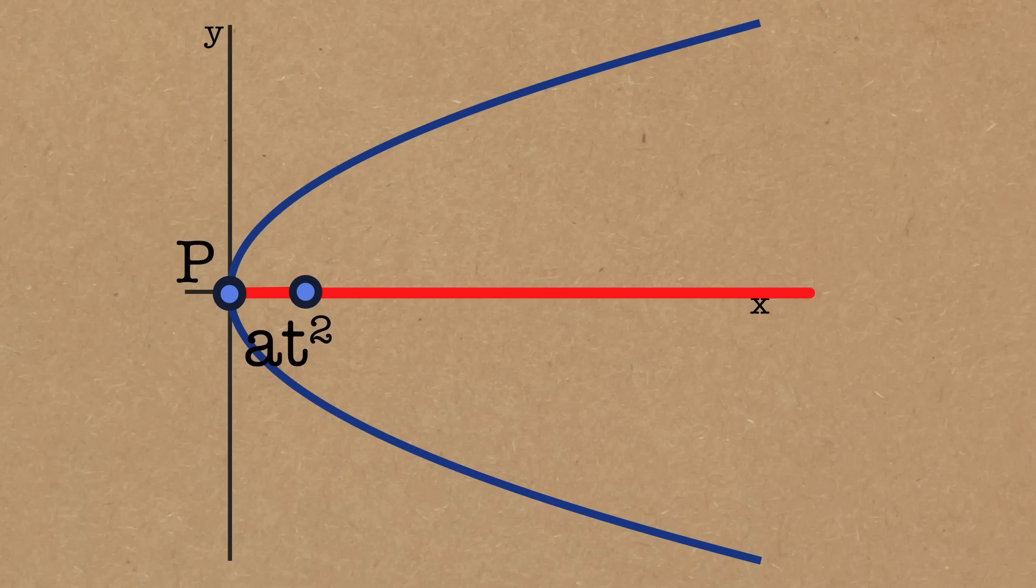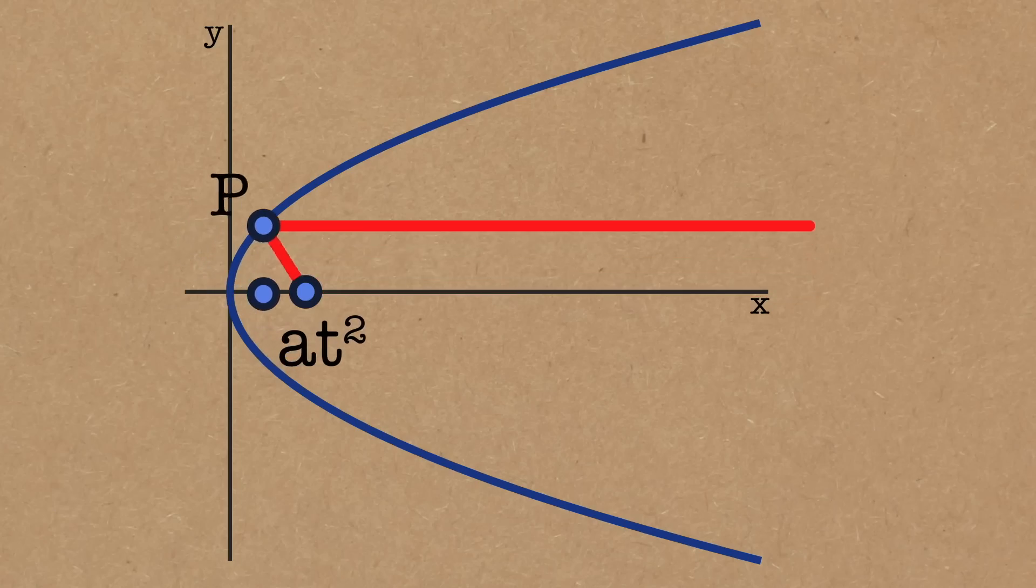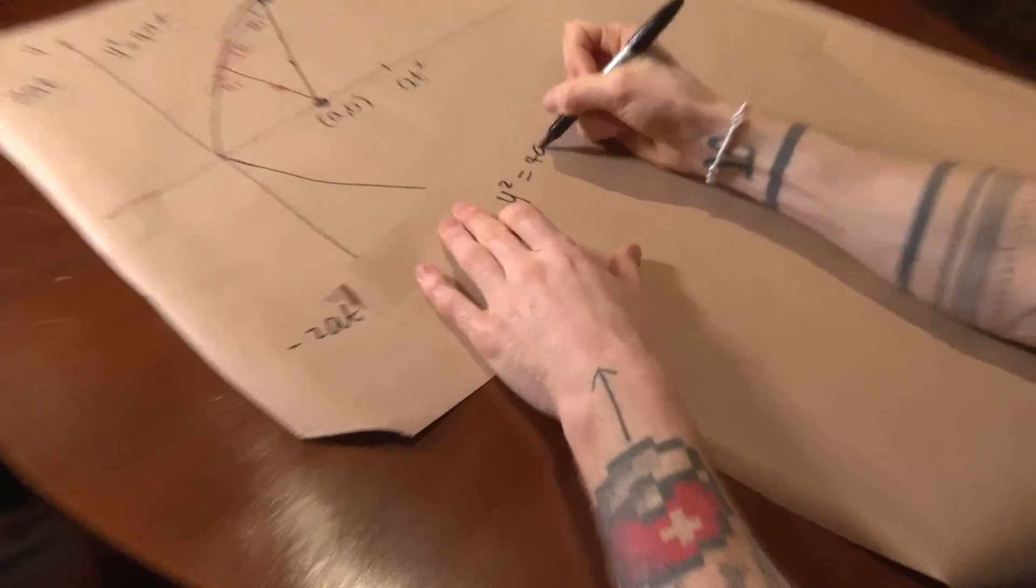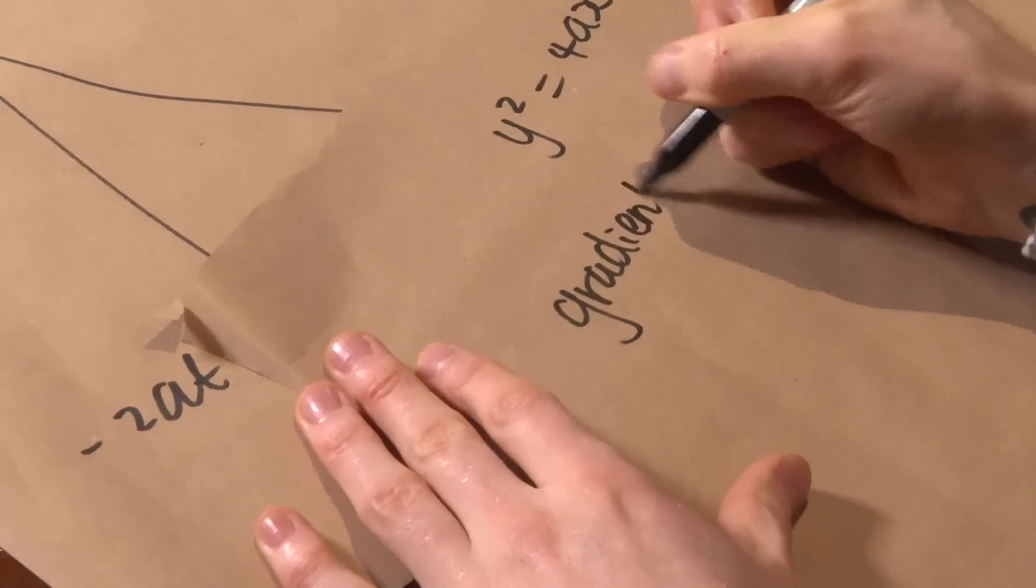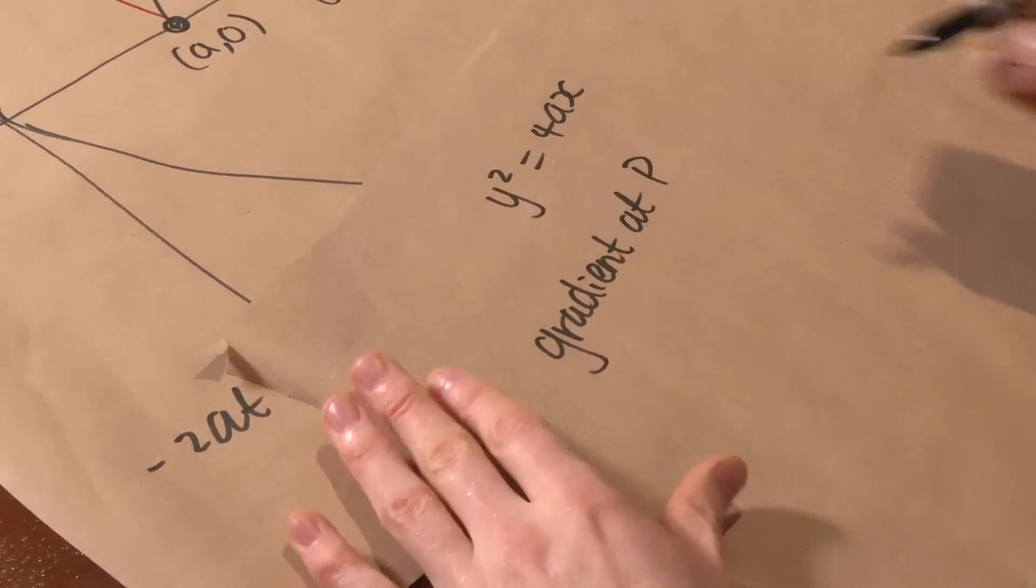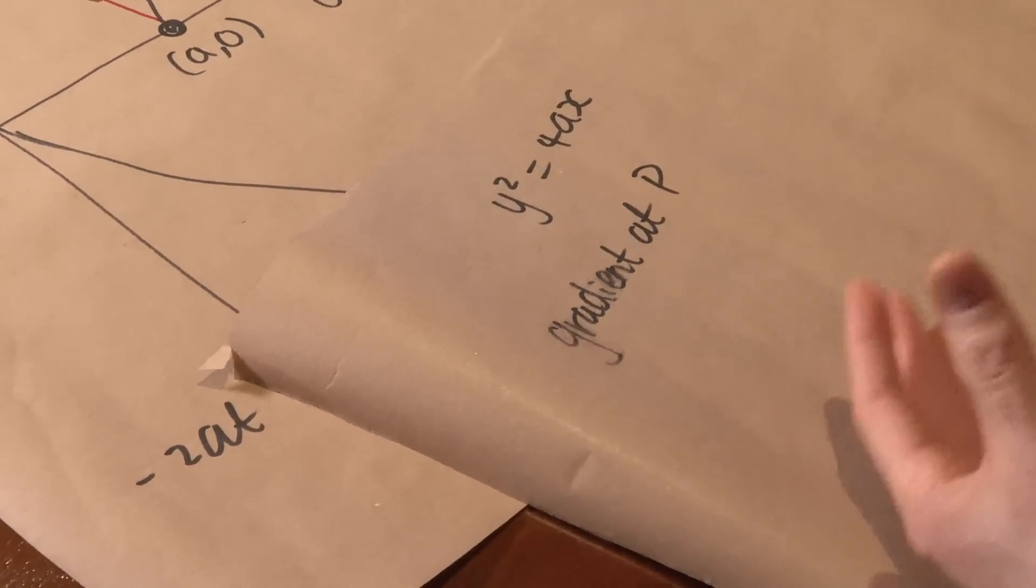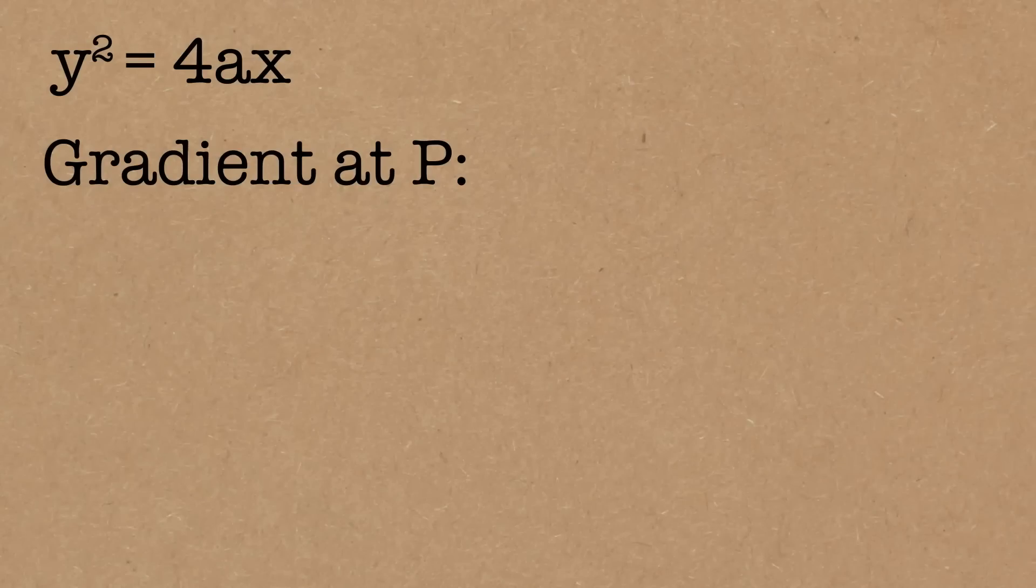First of all, we need to know the tangent to the curve up here. We fortunately have an equation, we know that y squared is equal to 4ax. We want to know the gradient at P, so the gradient at that point is found by differentiating our function dy by dx. So we know the coordinates of P as well, don't we? We know that's at squared and y is 2at.